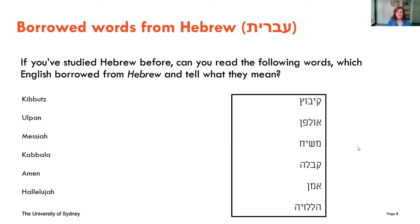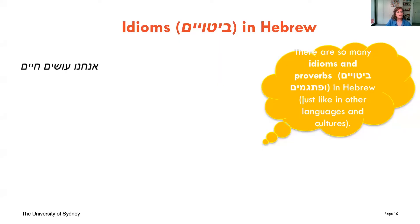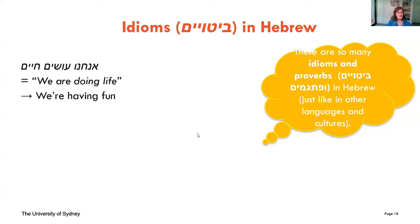In addition to borrowed words, we also have idioms — 'bituim' — and proverbs — 'pitgamim.' Whilst borrowed words tend to retain their original meaning, idioms and proverbs often convey a meaning specific to language and culture and make little or no sense if translated literally. The first example is 'anachnu osei chaim,' which literally translates as 'we are doing life,' which makes no sense, but the expression means 'we're having fun.'